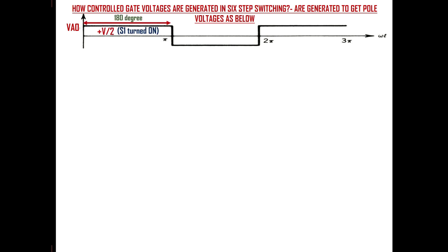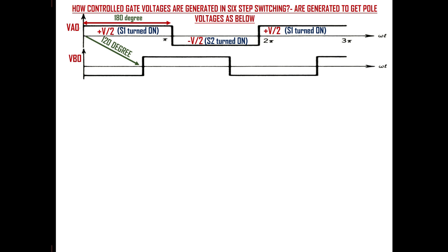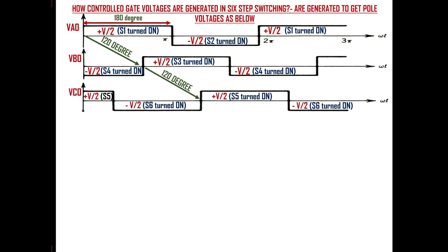The question in our mind should be: how are the controlled gate voltages generated using six-step switching so that we can control the pole voltages and hence the frequency of line voltages? In six-step switching there is no specific fashion like PWM. Instead, they are generated to get the pole voltages as shown here. The first pole voltage Va0 is generated such that it gets plus Vd/2 by turning on switch S1 in the first leg for 180 degrees, and minus Vd/2 by turning on switch S2 for the next 180 degrees — this is why it is called 180-degree conduction mode. Similarly, Vb0 should have 120-degree phase shift with respect to Va0, and Vc0 should have 120-degree phase shift with respect to Vb0.